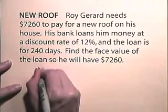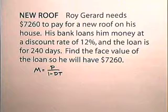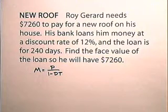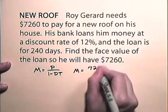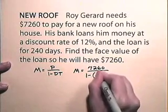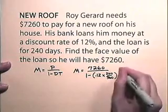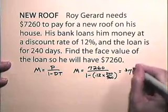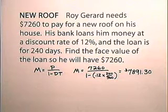Now we're going to do an exercise in which we find the face value. Face value is always equal to M equals P over 1 minus DT. So let's look at this problem. Roy Gerard needs $7,260 to pay for a new roof on his house. His bank loans him money at a discount rate of 12%, and the loan is for 240 days. Find the face value of the loan so he will have $7,260. So the face value will be $7,260 divided by 1 minus the rate times the time, 240 days over 360 days, which gives us a value of $7,891.30.